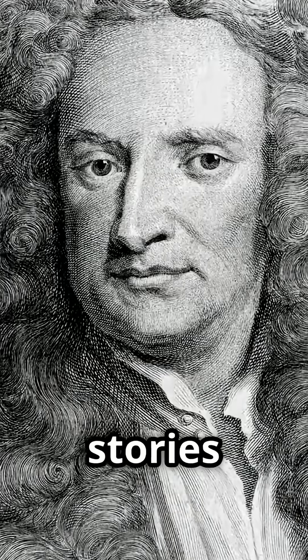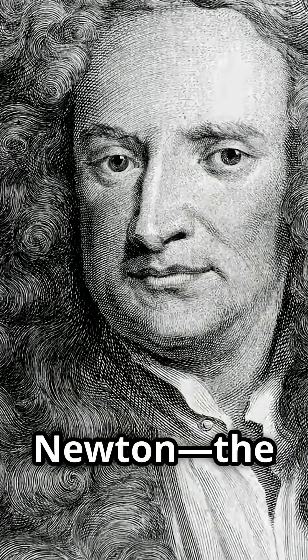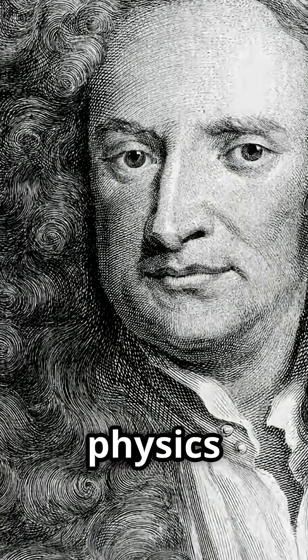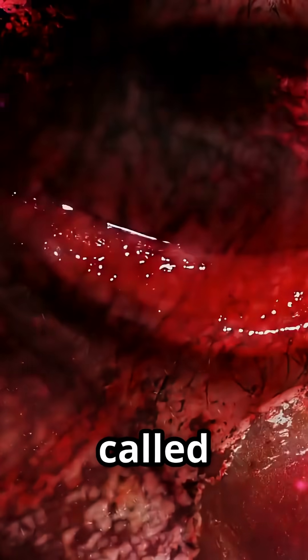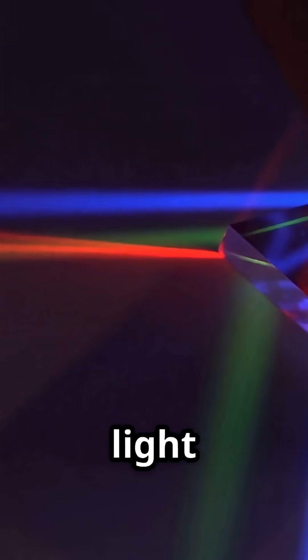One of the most shocking and little-known stories about Sir Isaac Newton, the father of classical physics, is that he once inserted a long, blunt, needle-like object called a bodkin into his own eye socket to study the nature of light and colour.